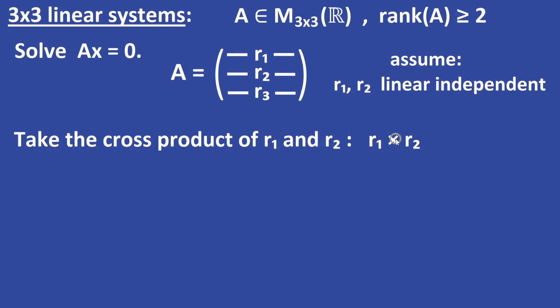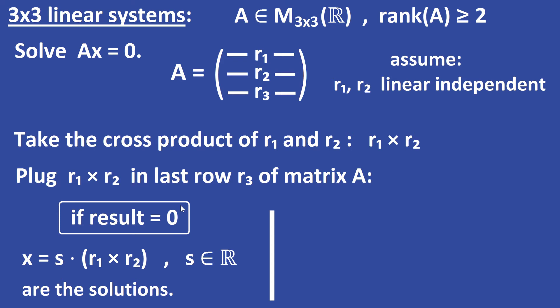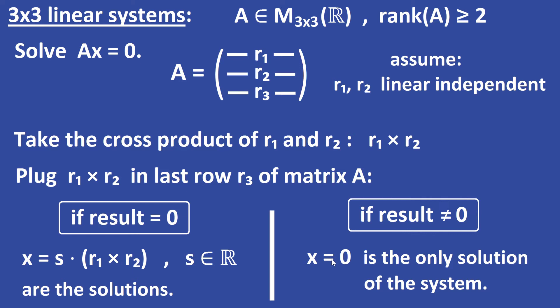Now compute the cross product of the two linearly independent rows R1 and R2. The cross product of R1 and R2 is a non-zero vector in R3. Plug this cross product vector into the last row R3. If the result equals 0, then x equals S times (R1 cross R2), with S in R, are the solutions. If the result is not equal to 0, then x equals the zero vector is the only solution.